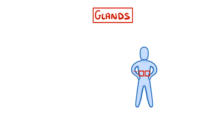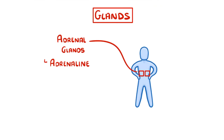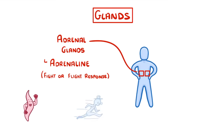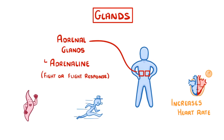Sitting just on top of our kidneys, we have our adrenal glands, which produce adrenaline. This is normally released during the fight-or-flight response, when we're startled or scared. It basically gets us ready to fight or run, by doing things like increasing our heart rates and generally getting our blood pumping faster.